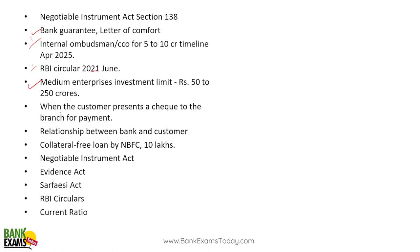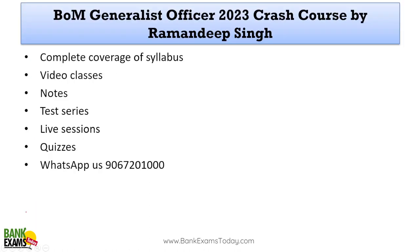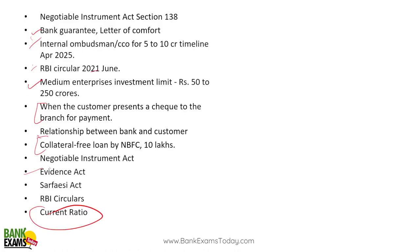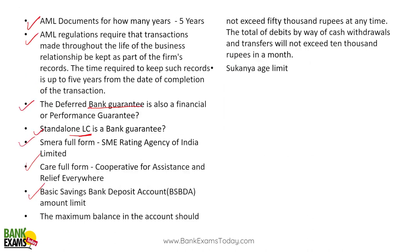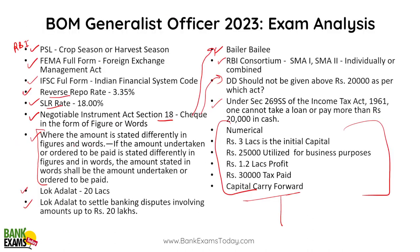When a customer presents a check to the branch for payment — not entirely clear which act but it's from Negotiable Instrument. Collateral-free loan by NBFC — again Negotiable Instrument Act. Evidence Act — this all falls under documentation. Current ratio — questions from current ratio also came. So you can see what the additional topics are. Negotiable Instrument Act has a lot of questions — please do the Negotiable Instruments Act properly, you will get many questions from it.